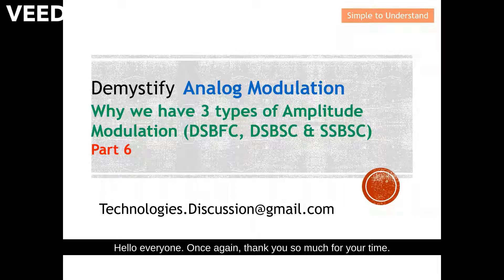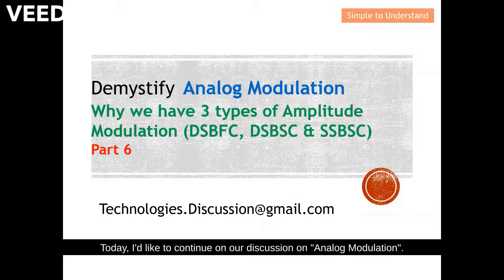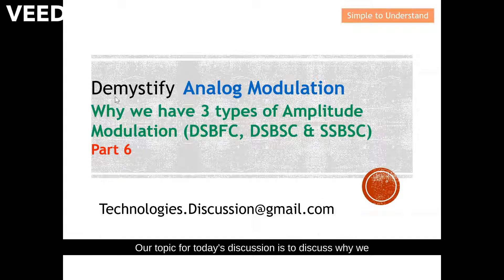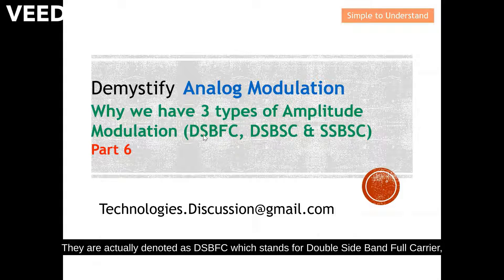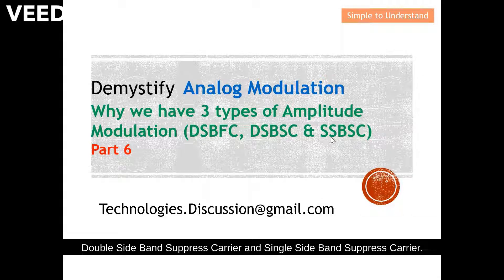Hello everyone, thank you so much for your time today. I'd like to continue our discussion on analog modulation. Our topic for today is to discuss why we need to have three different types of amplitude modulation: DSB-FC (Double Sideband Full Carrier), Double Sideband Suppressed Carrier, and Single Sideband Suppressed Carrier.